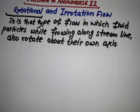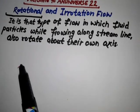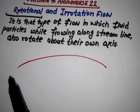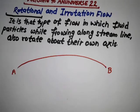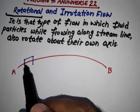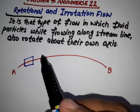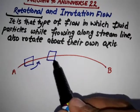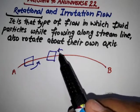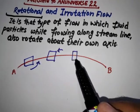So how it is: suppose this is a streamline that is from A to B and this is the fluid particle that is moving along this streamline, but it is rotating also about its own axis.